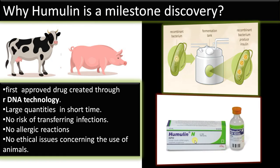Recombinant insulin or humulin is the first approved marketable drug developed through recombinant DNA technology. Large quantities can be produced within a short time as the demand for insulin is rising for treating diabetes. There is no risk of transferring infections, no allergic reactions associated with cow and pig insulin, and no ethical issues — especially slaughtering issues — concerning the use of animals.